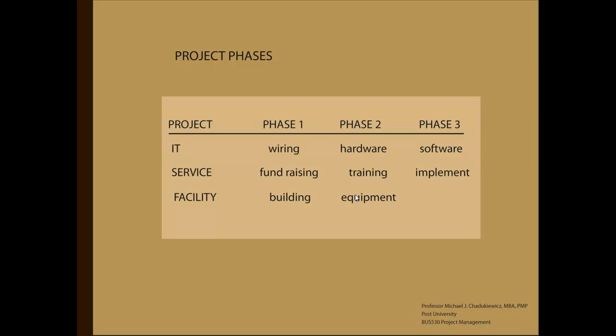In essence, each phase is treated as a separate project. The reason for this is typically each of these phases is carried out by a specialized group of vendors. Also, within the organization, a different manager may be responsible for supervising this work. For example, wiring is the responsibility of the facilities department. Hardware, such as routers, switches, and computers are the responsibility of the IT department, and software is the responsibility of the MIS or Management Information Systems department.